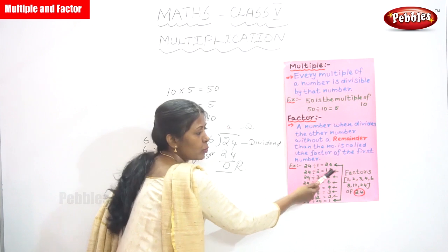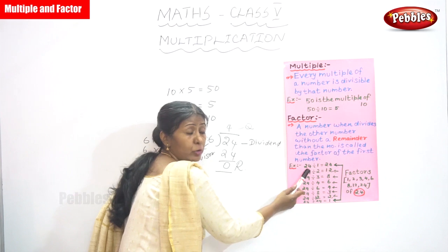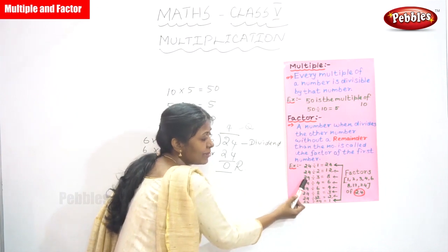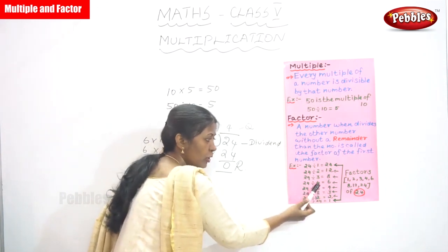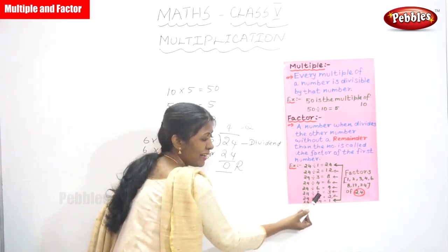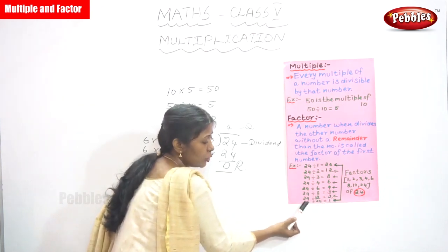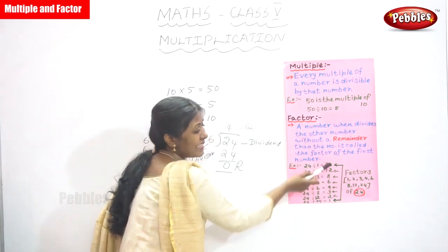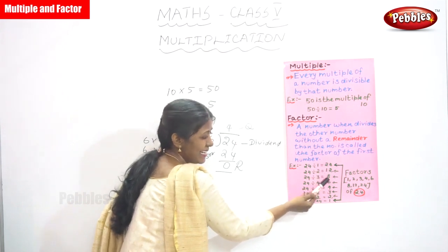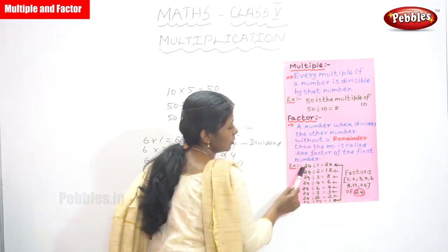For example, 24 divided by 1 gives 24. Divided by 2 gives 12. Divided by 3 gives 8. Divided by 4 gives 6. Divided by 6 gives 4. Divided by 8 gives 3. Divided by 12 gives 2. Divided by 24 gives 1. So these numbers — 1, 2, 3, 4, 6, 8, 12, 24 — are all called factors of 24.